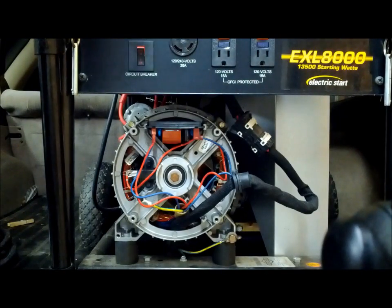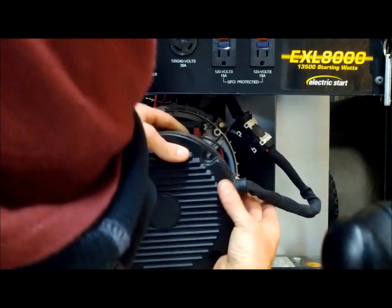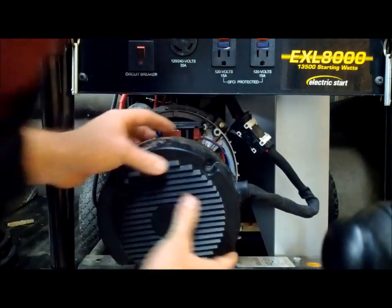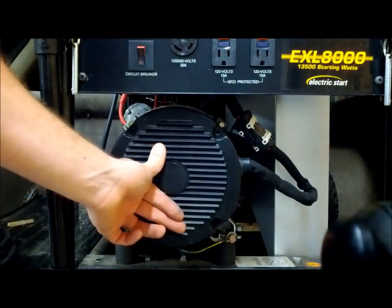After testing your generator, make sure it puts out power. You can reinstall that black cover. You want to make sure you install that grommet back correctly into the front cover, as you don't want to pinch the wire. Hold it in place, put your four screws in, and you're done.